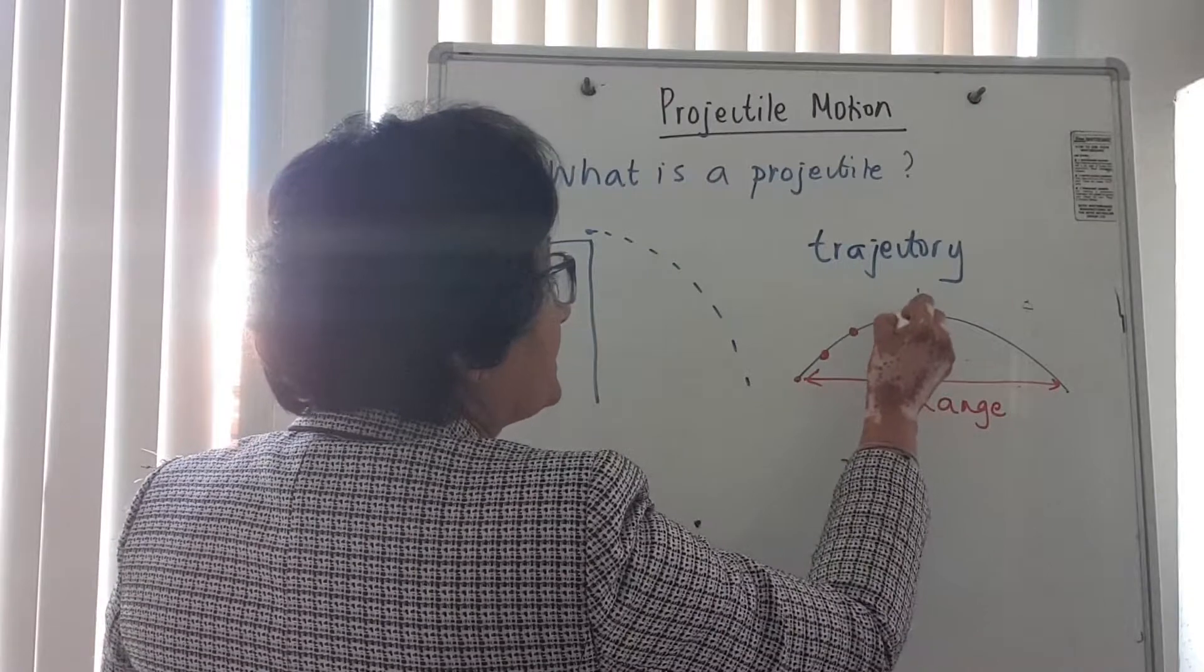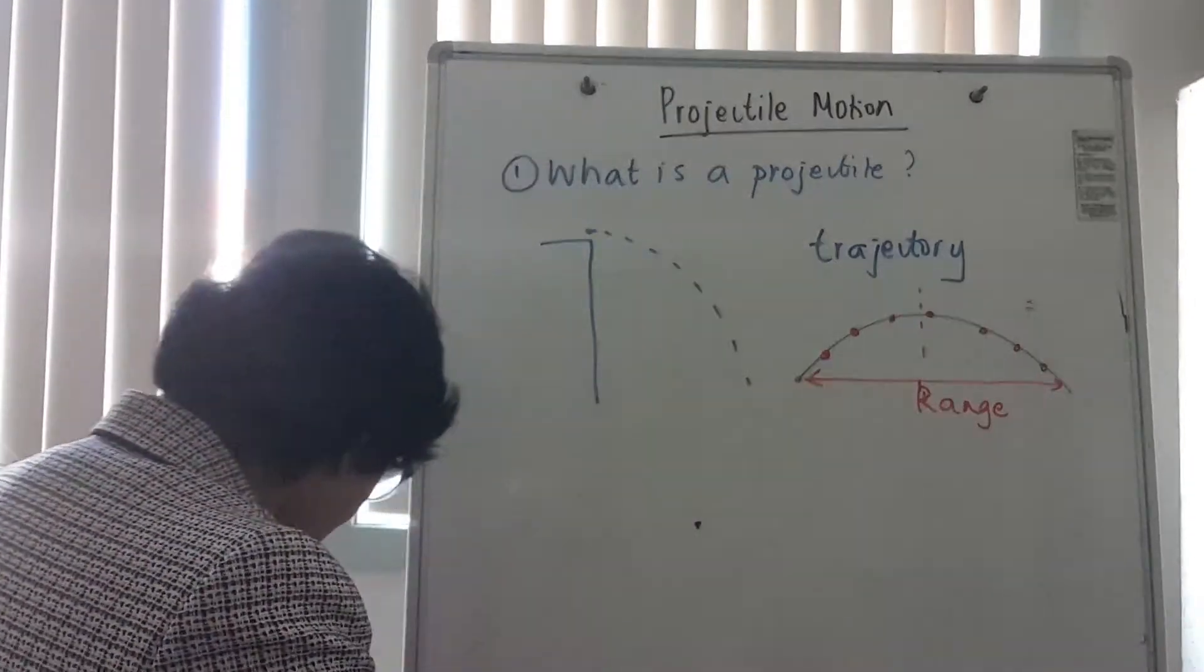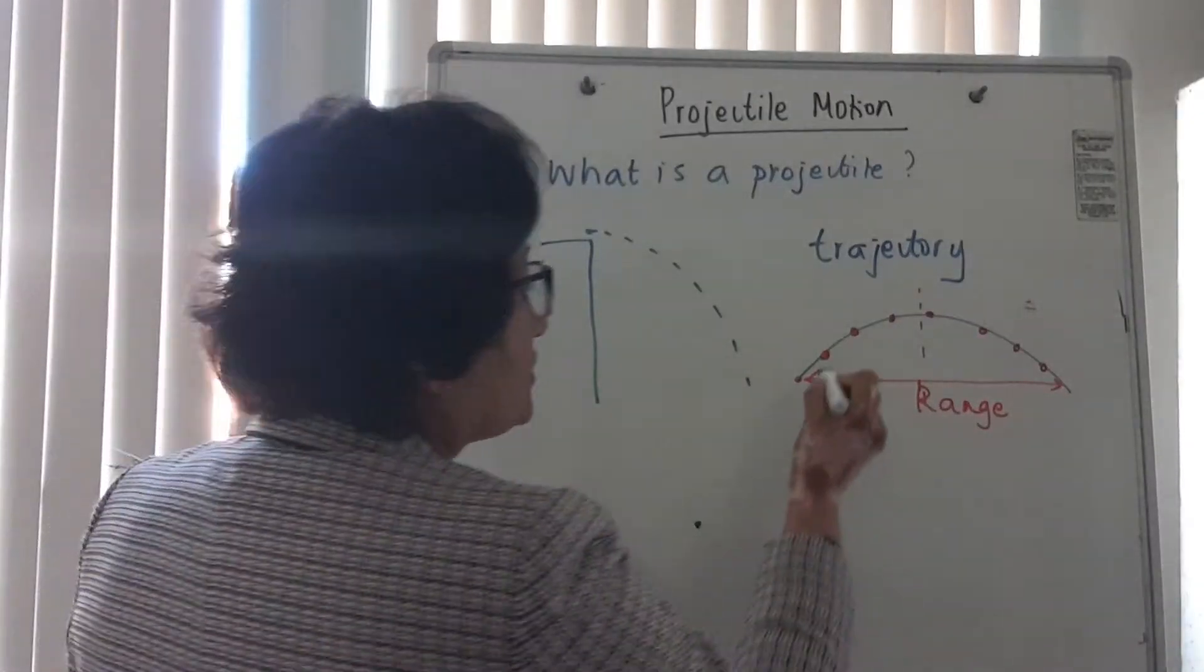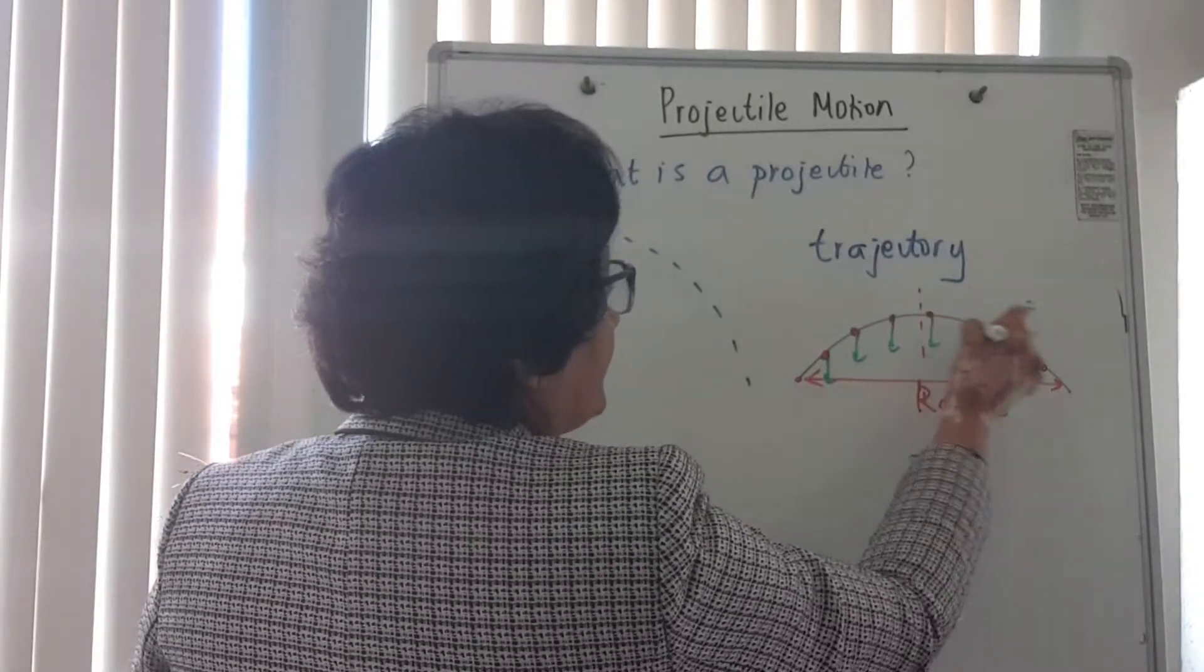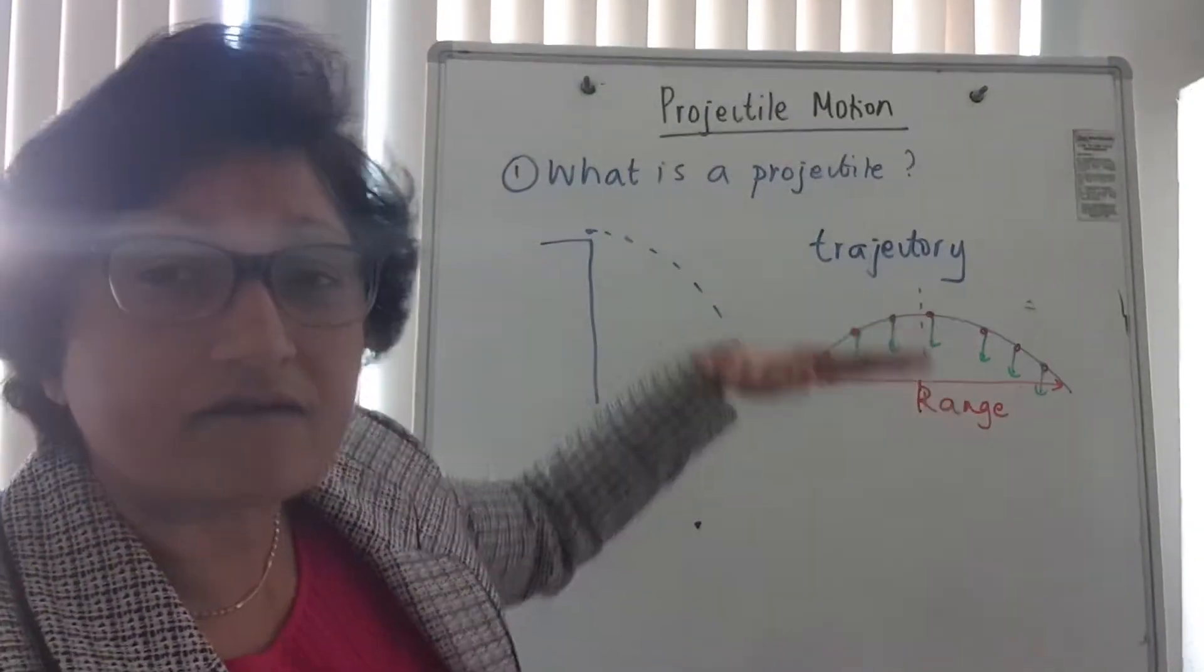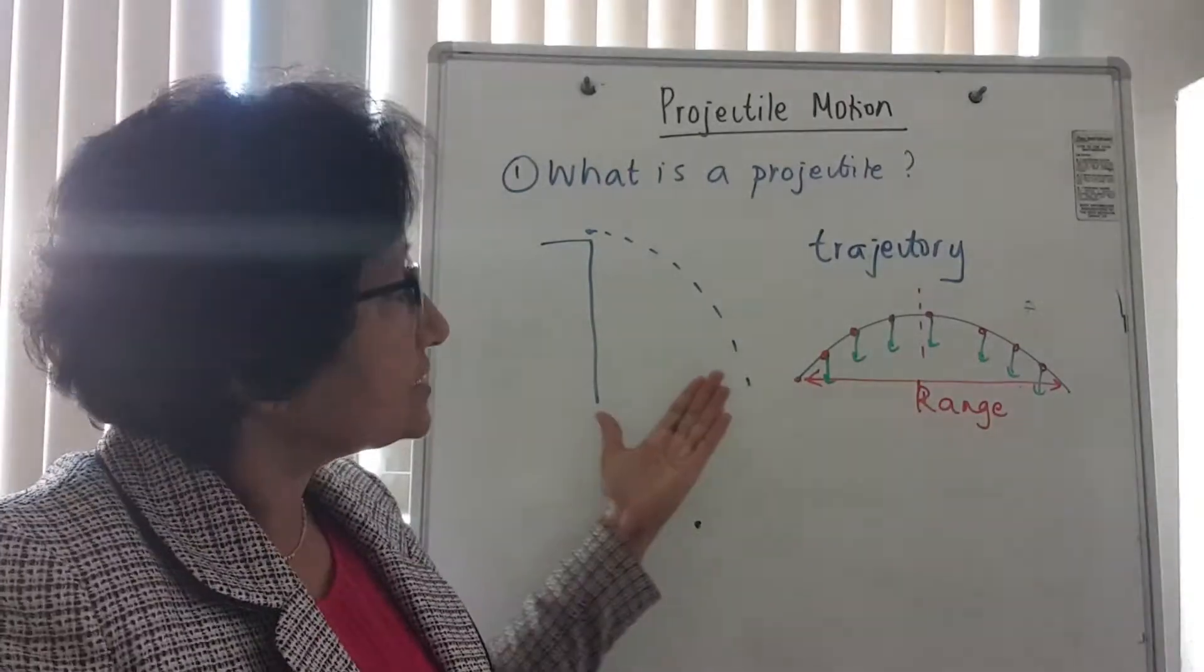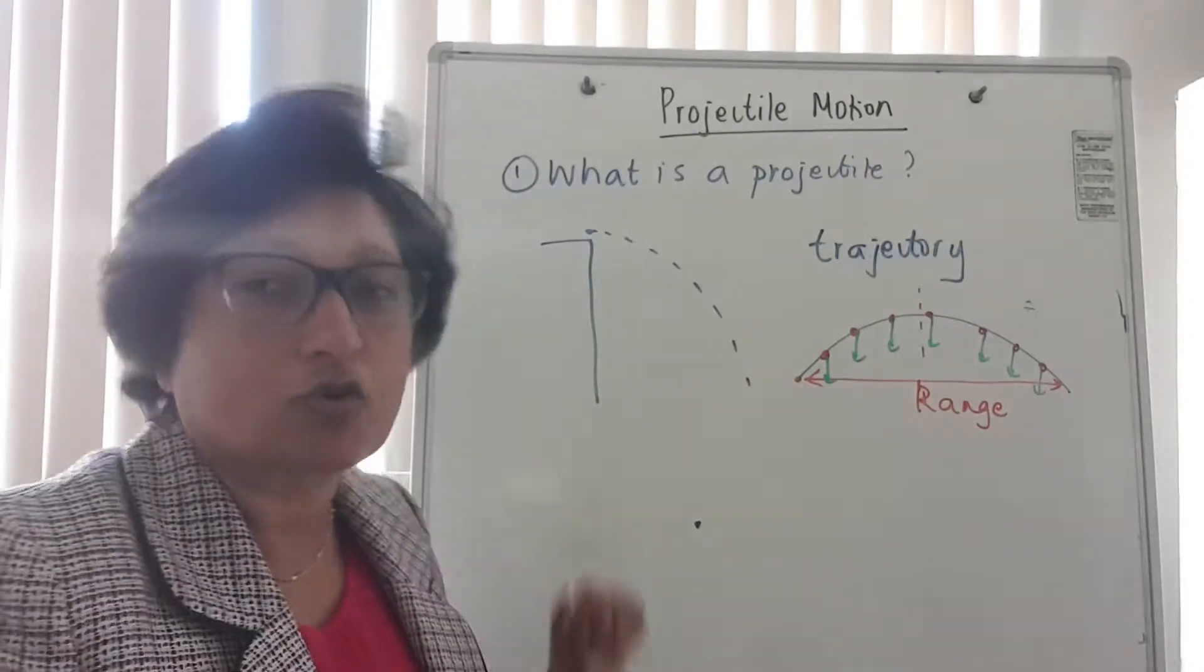So at any instant of time, the force that's acting on a projectile that is moving all the time, the size of this force is the same and the size of the force is the force of gravity, and that acts vertically down. Because it is accelerated motion in the vertical direction, we have to use kinematic equations to solve anything to do with the vertical motion of a projectile.